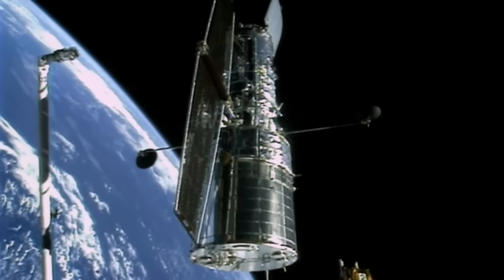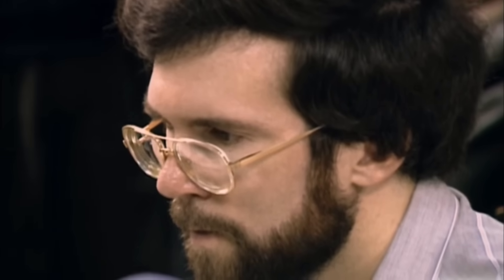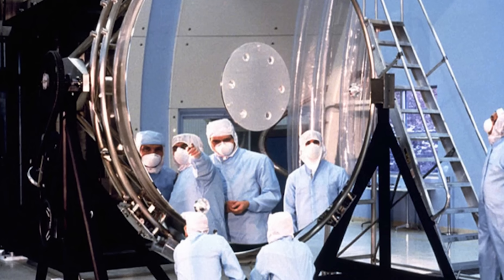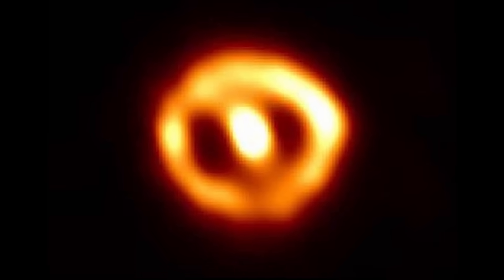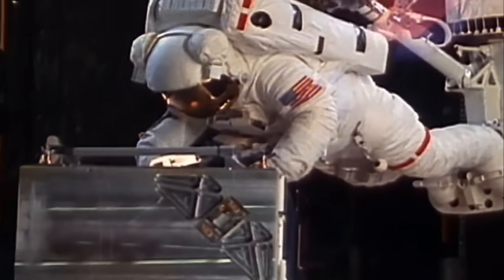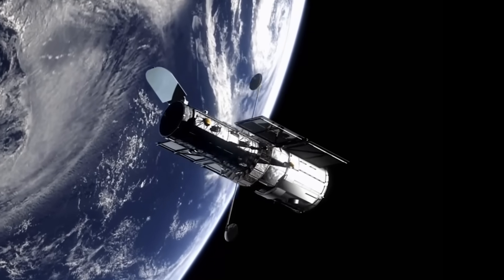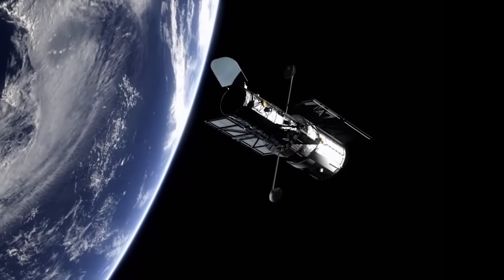But as soon as Hubble came online, scientists noticed a serious problem with its mirror. Although this was the most precisely cut mirror ever made, a slight defect of just 2,000 nanometers meant that Hubble failed to produce sharp images. After three years, scientists managed to produce a fix for the mirror, and Hubble began scanning the universe for its secrets.